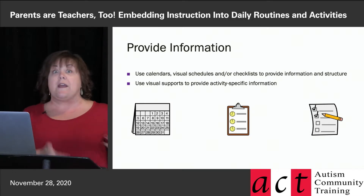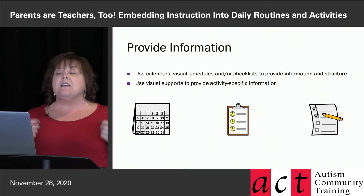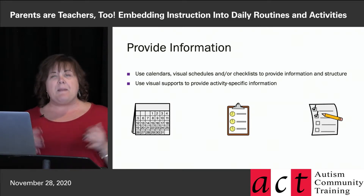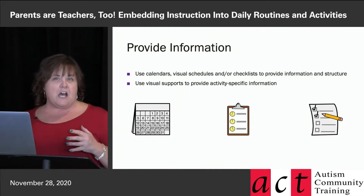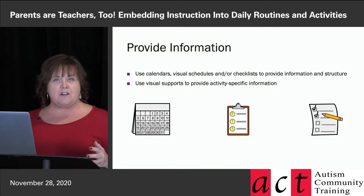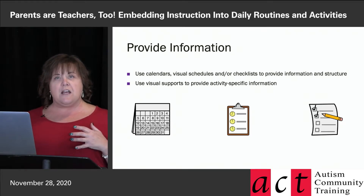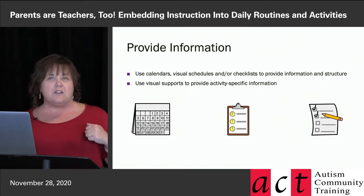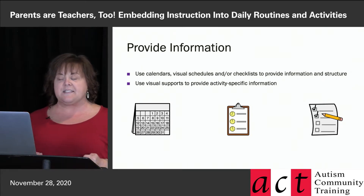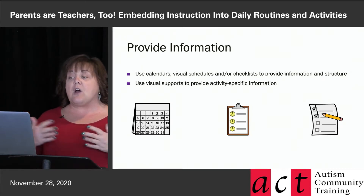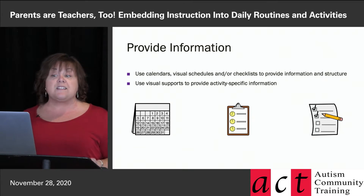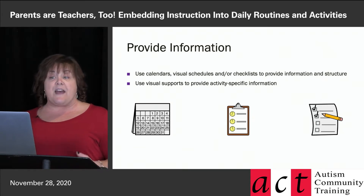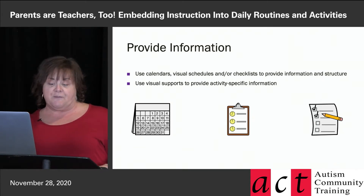Using things we all use — calendars, schedules, checklists — to make plans, organize our time, and think about what needs to get done first, what can wait until later, and how we're going to make those plans. There are lots of different kinds of visual supports we can use to provide activity-specific information.